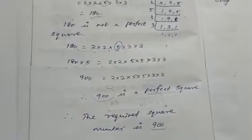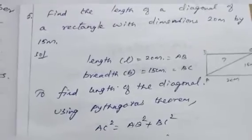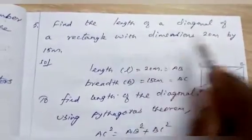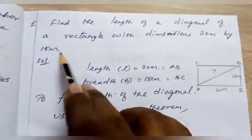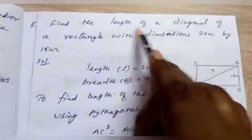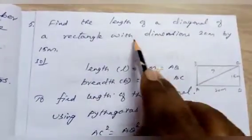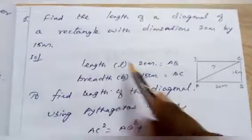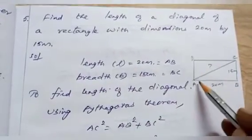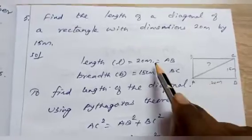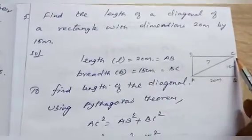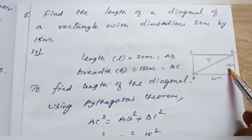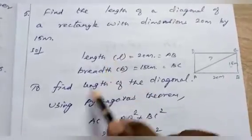The next fifth question is: find the length of the diagonal of a rectangle with dimensions 20 meters by 15 meters. The length AB = 20 meters, and the breadth BC = 15 meters. We need to find the length of the diagonal.